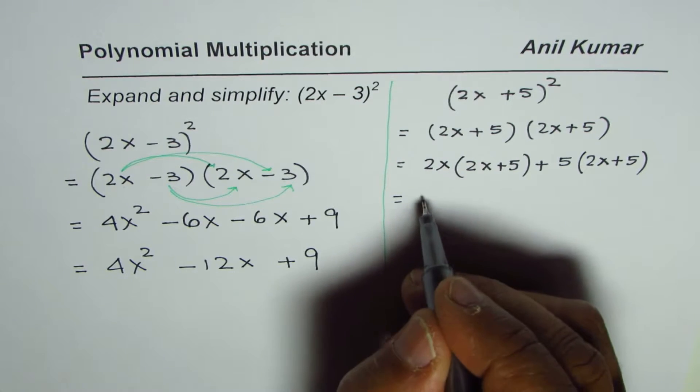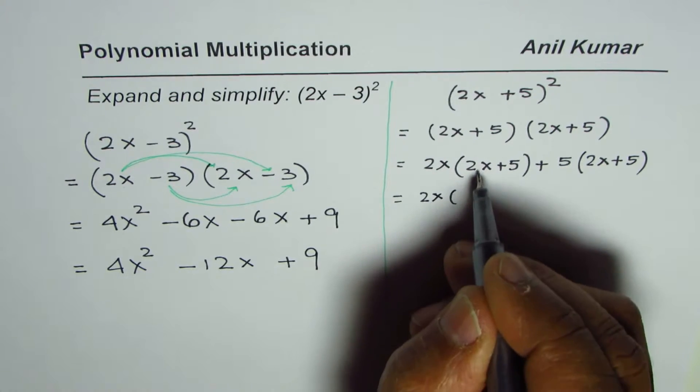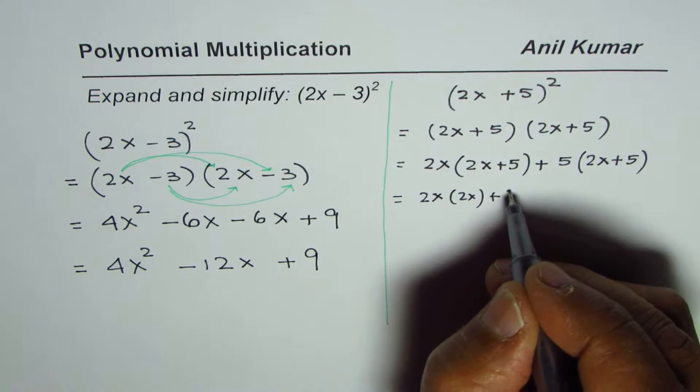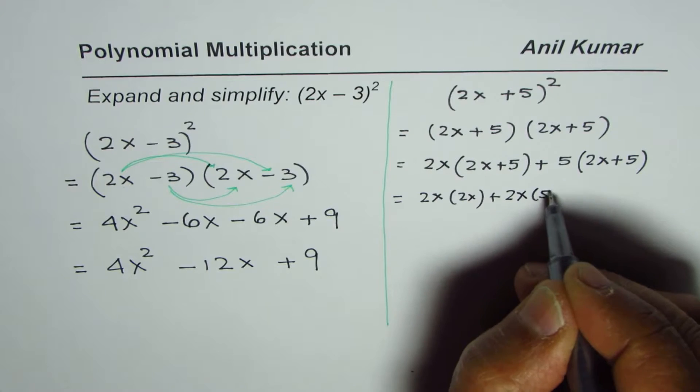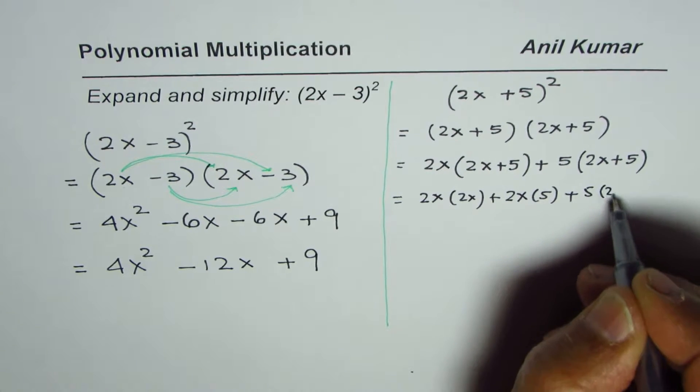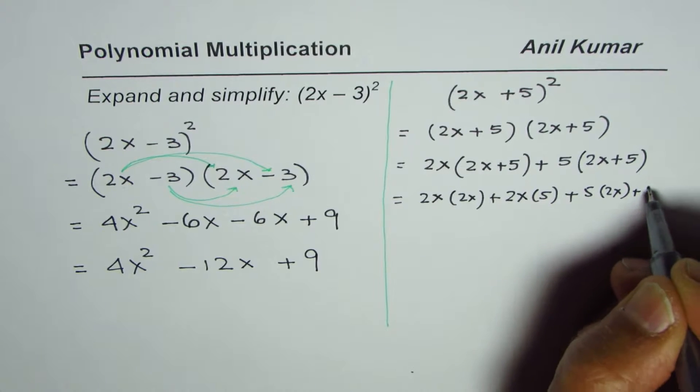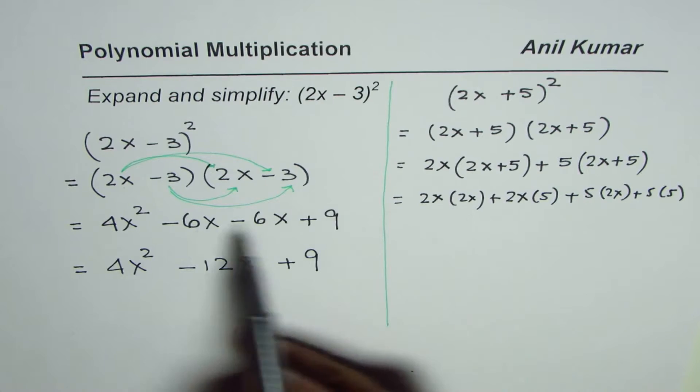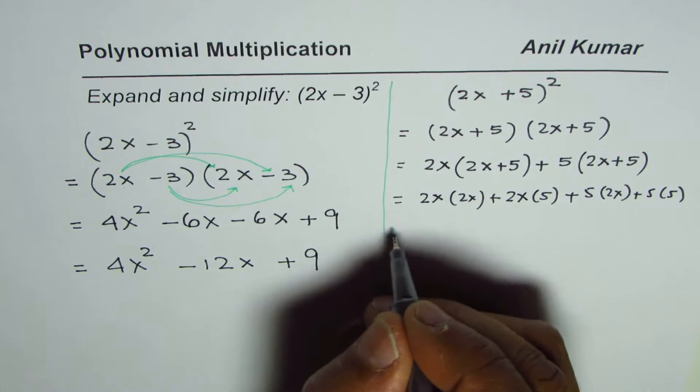So 2x times 2x. Multiply 2x by 5 also. So 2x times 5 plus, expand these ones, 5 times 2x plus 5 times 5. So this time, I'm giving you all the steps rather than explaining as I did earlier.